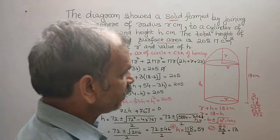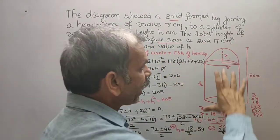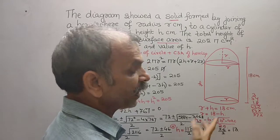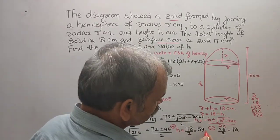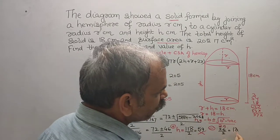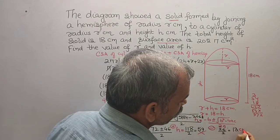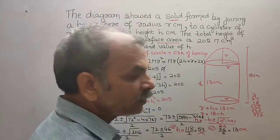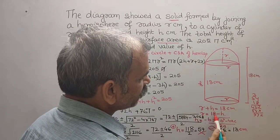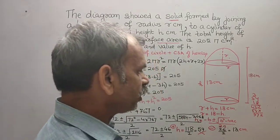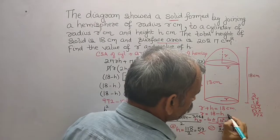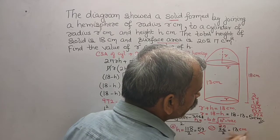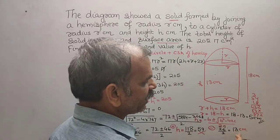The total height of the solid is 18 cm, so h = 59 is not valid as it exceeds 18. Therefore h = 13 cm is the height of the cylinder. Then r = 18 − h = 18 − 13 = 5 cm. So the radius is 5 cm and the height is 13 cm.